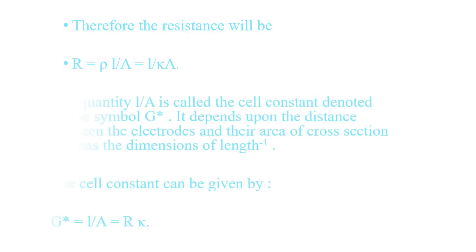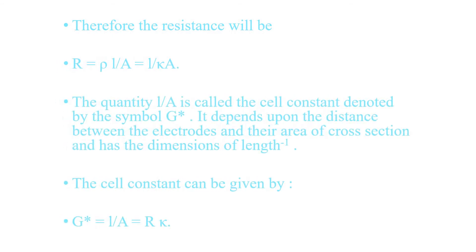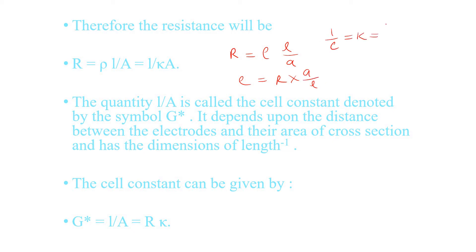Now, the resistance is given by the formula: R = ρ × L / A. We can also write conductivity: ρ = R × A / L, and therefore 1/ρ = K = (1/R) × (L/A).